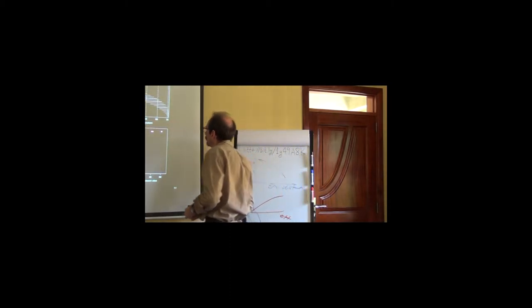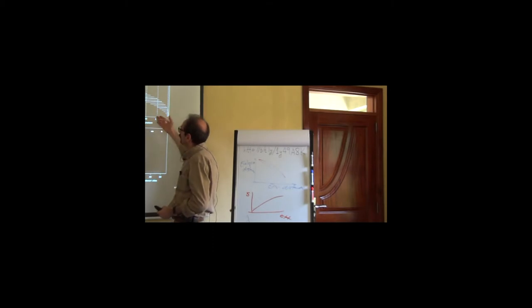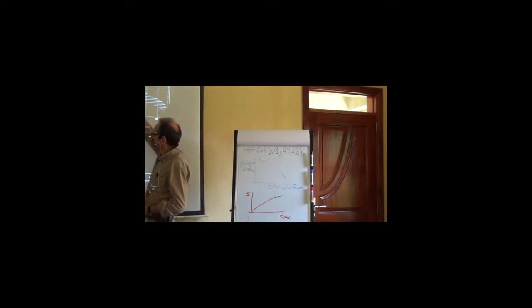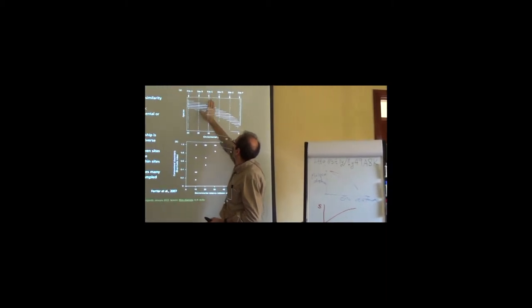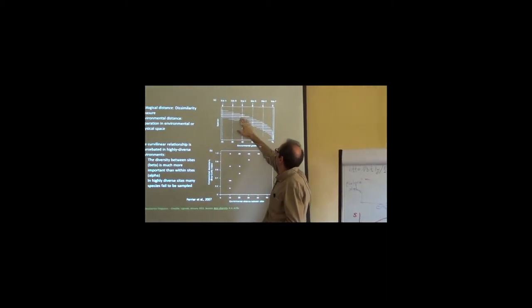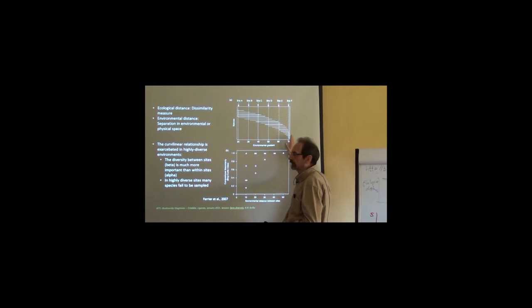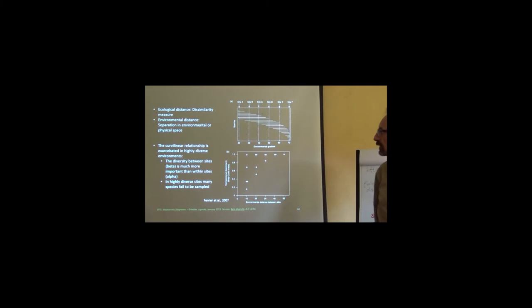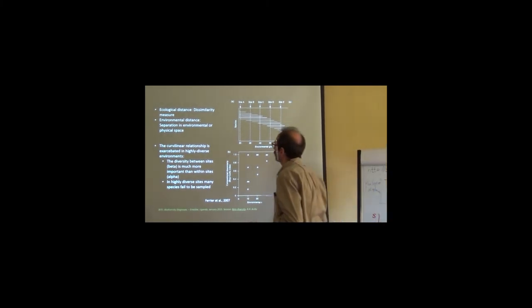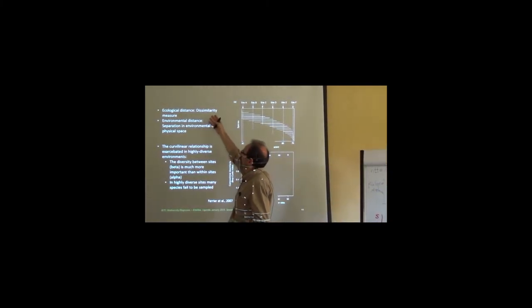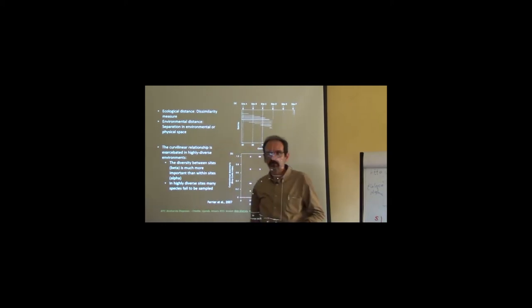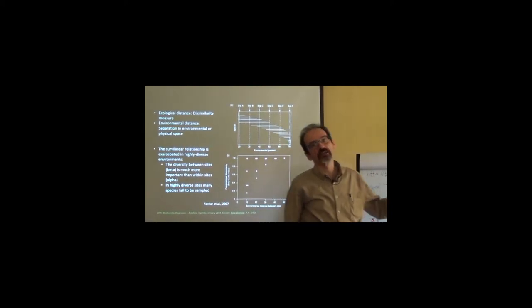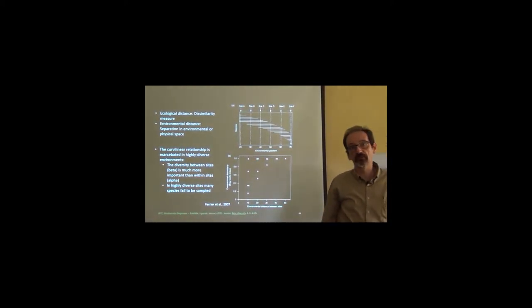So here you have an environmental gradient, for instance, you have the species composition, and you see that rather than having, say, a straight band, they will change at a different rate at different places. Let's assume that the ecological distance has been measured as a dissimilarity measure. Well, in this case, the dissimilarity measure by choice is the Bray-Curtis index.